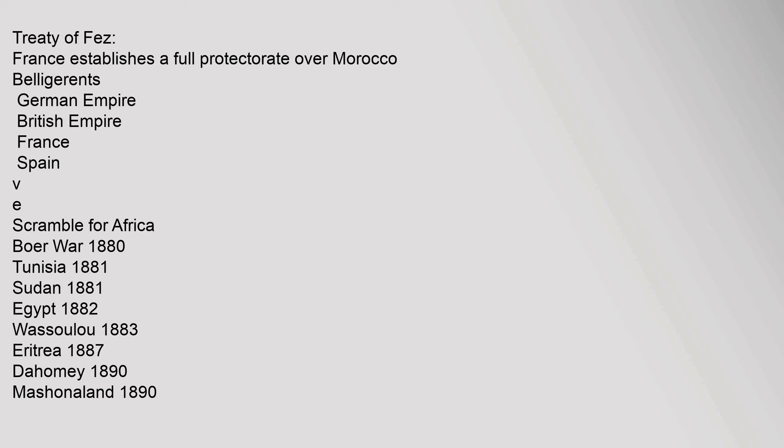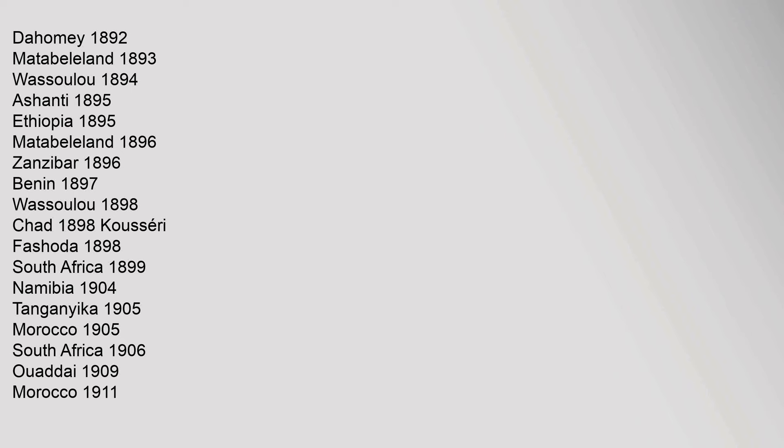Colonial conflicts and belligerents: Dahomey 1892, Matabeleland 1893, Wasoulou 1894, Ashanti 1895, Ethiopia 1895, Matabeleland 1896, Zanzibar 1896, Benin 1897, Wasoulou 1898, Chad 1898, Kosairi-Fashoda 1898, South Africa 1899, Namibia 1904, Tanganyika 1905, Morocco 1905, South Africa 1906, Wadai 1909, Morocco 1911.